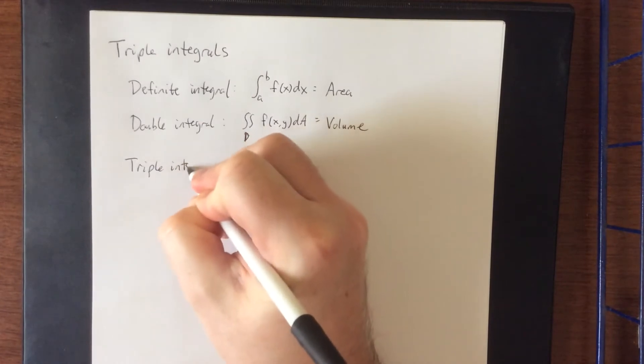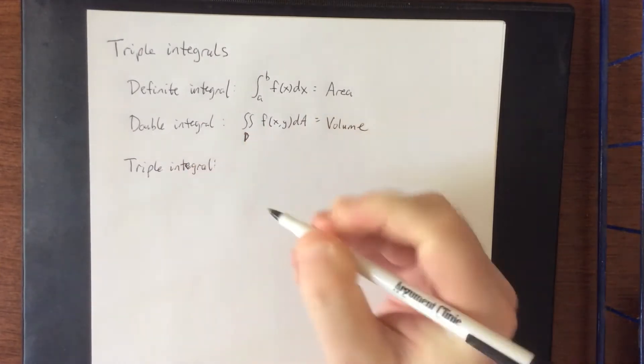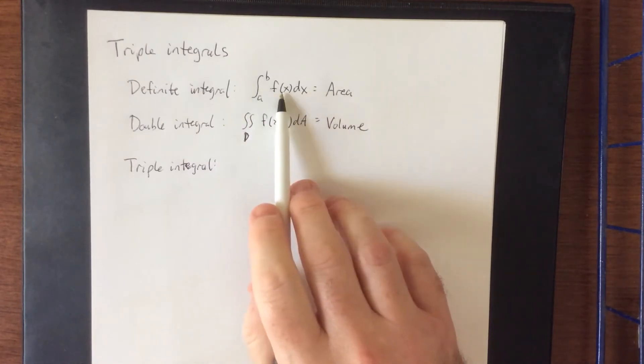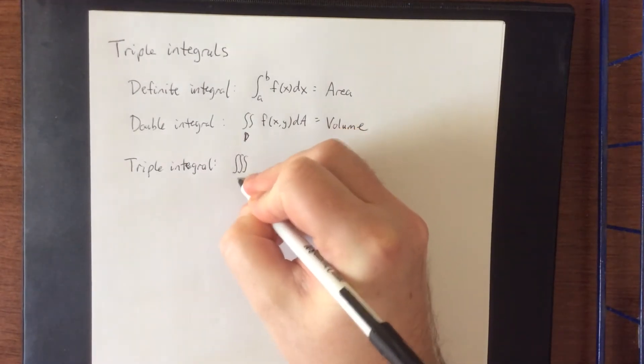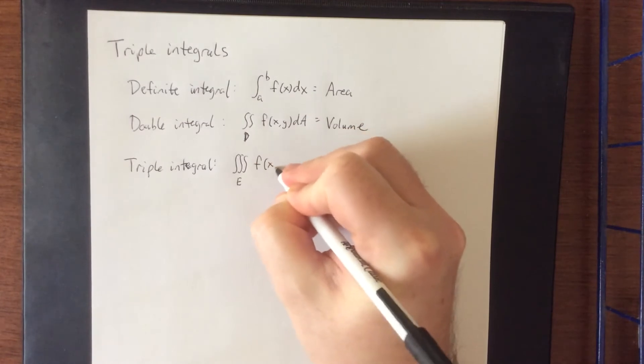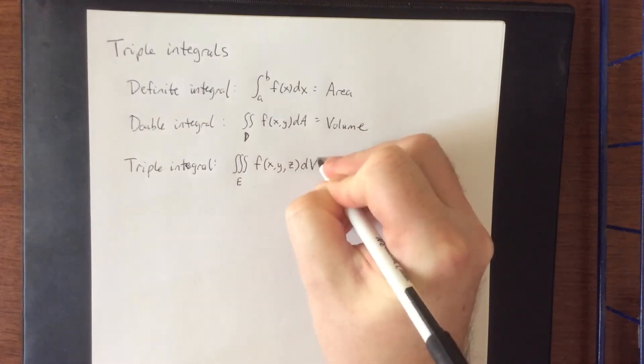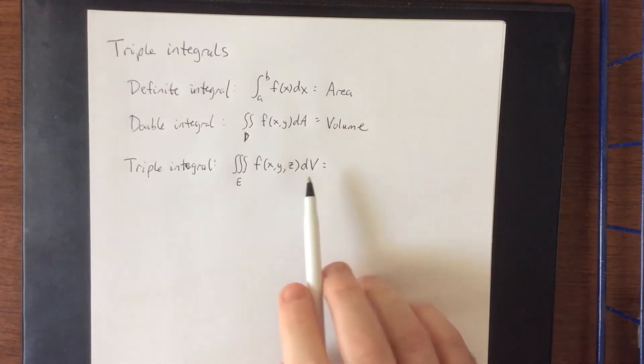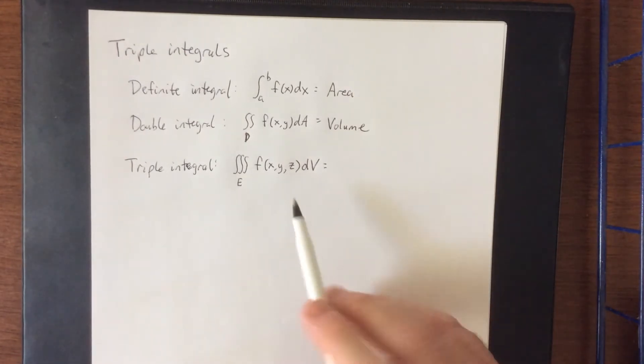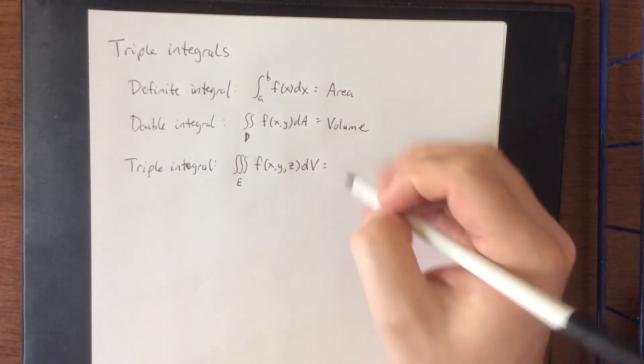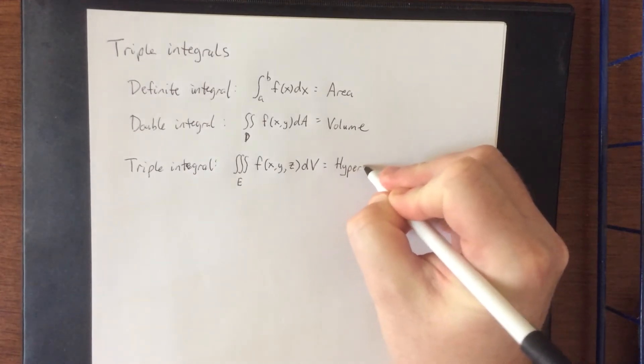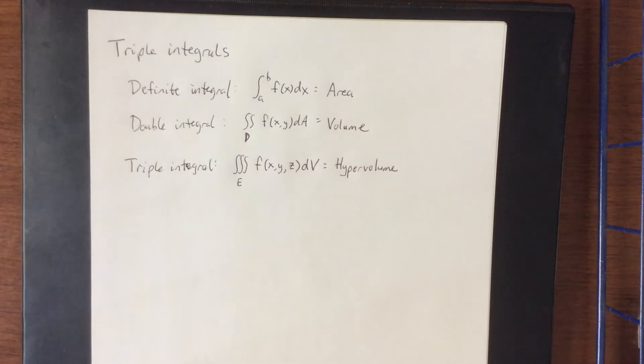So if we were to consider a triple integral, first off a single integral needed a function of one variable, a double integral needed a function of two variables, which means that if we're going to consider a triple integral, we would need to have a function of three variables. Now this is one function that we then integrate three times, which is going to give us a four-dimensional quantity. That four-dimensional quantity is known as hypervolume.